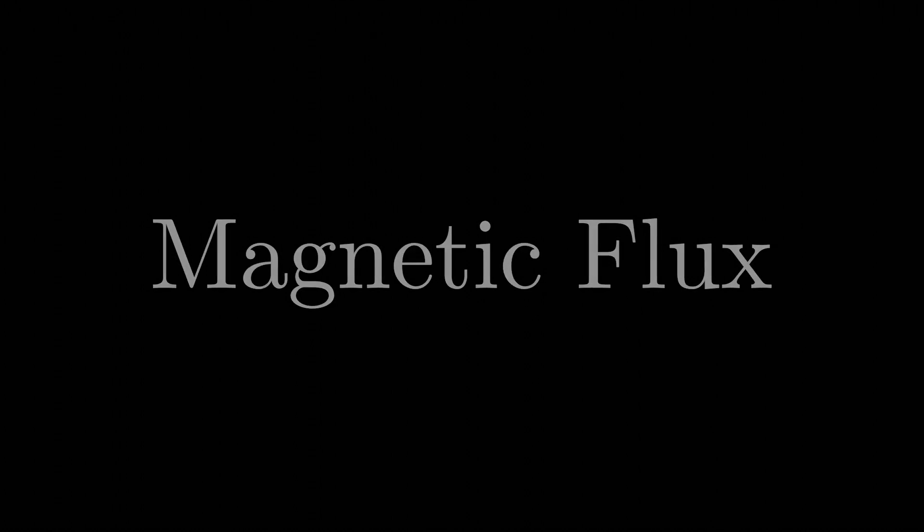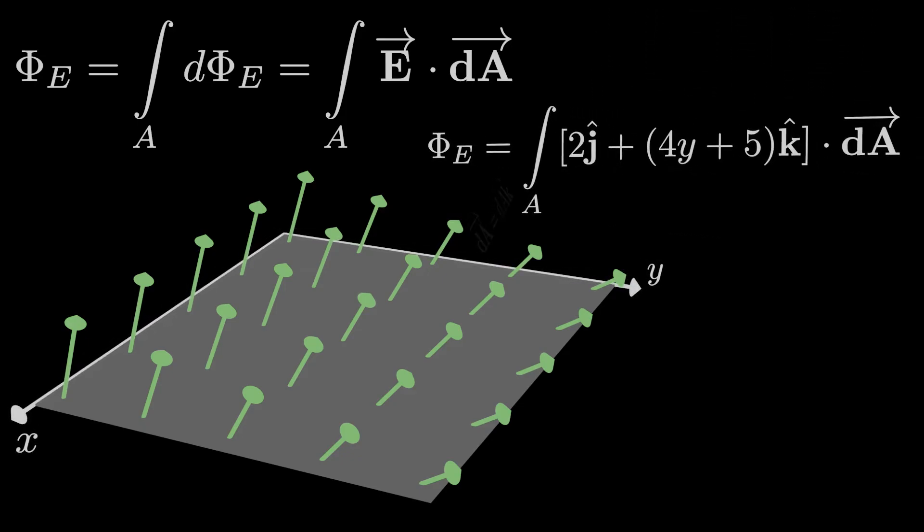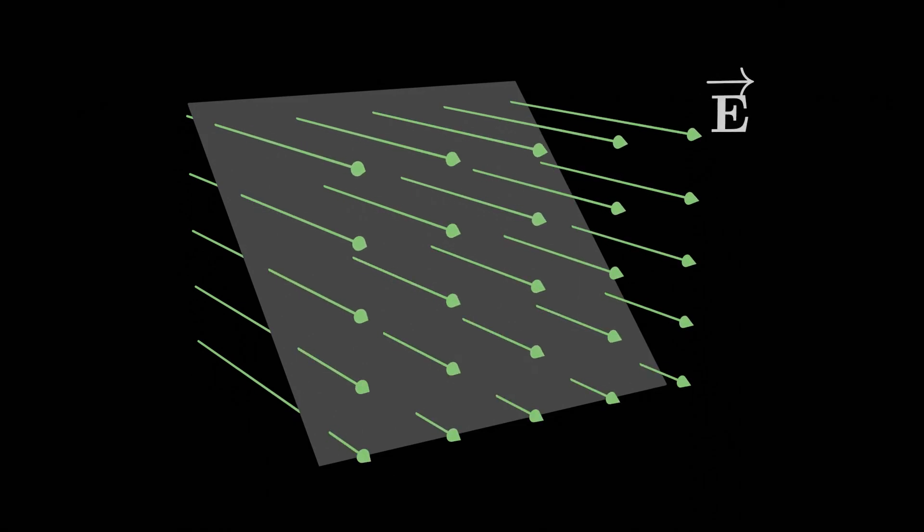For the calculus students, we've already gone over how to deal with electric flux in our Gauss's Law module. So how exactly does magnetic flux differ from electric flux? Easy, just every time we have the electric field passing through some area, replace it with the magnetic field.